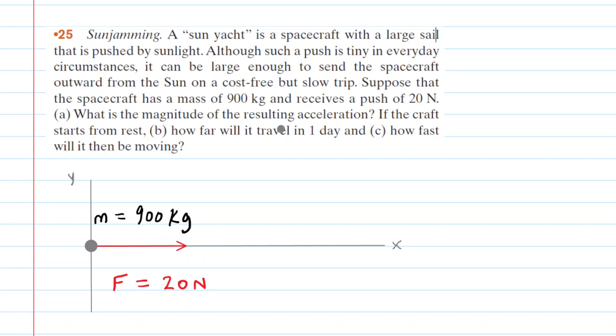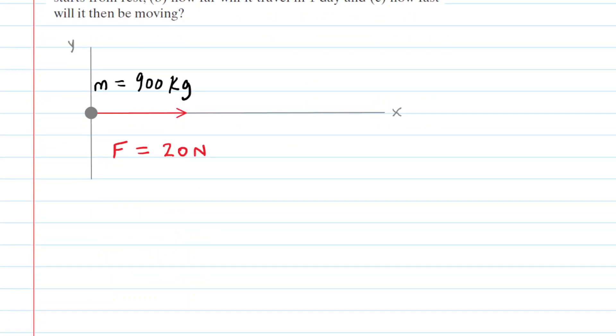In Part A we have to calculate the resulting acceleration. Let's apply Newton's second law, which tells us that the net force acting along the X direction equals the mass of the spacecraft multiplied by its acceleration in that same direction.